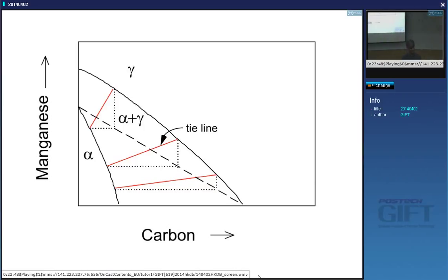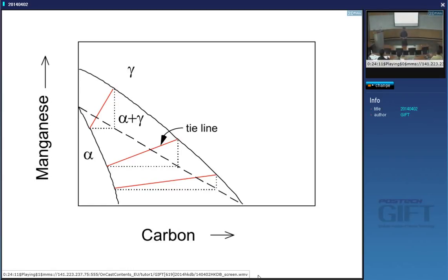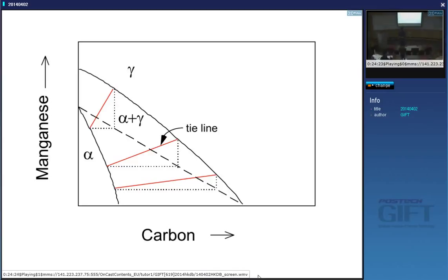You don't necessarily have to have equilibrium at the interface. A student notes that the tangent plane on the ternary free energy surface is fixed for a given composition under equilibrium. The instructor agrees: the phase diagram is independent of kinetics, and for a given tie line there is only one tangent plane possible — the one touching both free energy surfaces and passing through the alloy composition.